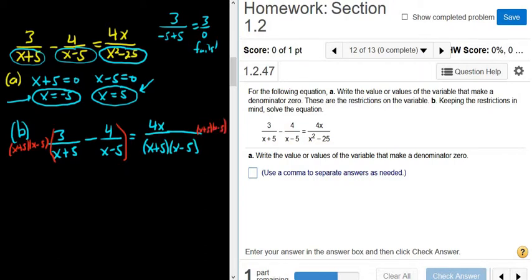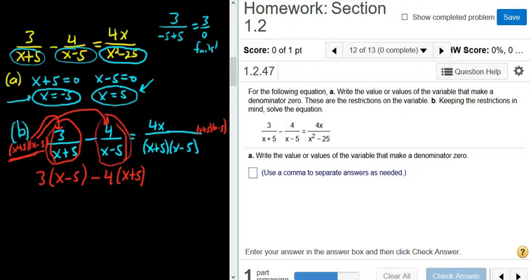So now we have to carefully distribute. So we're taking this and we're multiplying it by this. So the x plus 5s cancel and we're left with 3 parentheses x minus 5. And then we take this and then we multiply it again by this. So this time the x minus 5s cancel and we're left with 4x plus 5. Again, this times this, the x plus 5s cancel. We're left with 3x minus 5. And then this times this, the x minus 5s cancel. We're left with 4 times x plus 5.